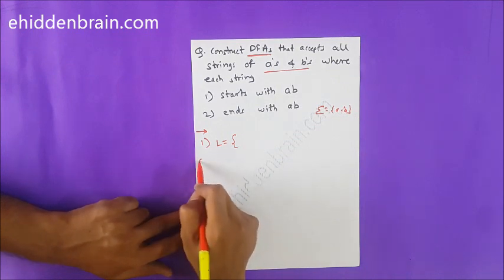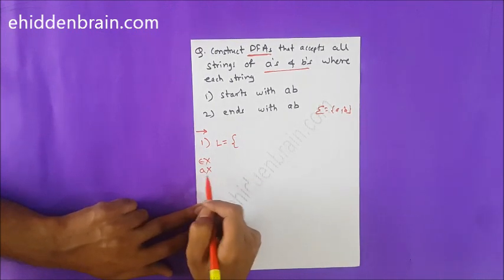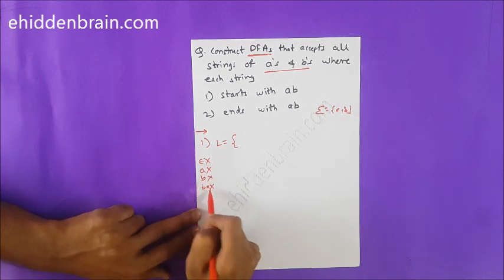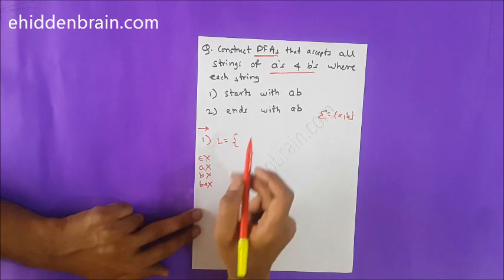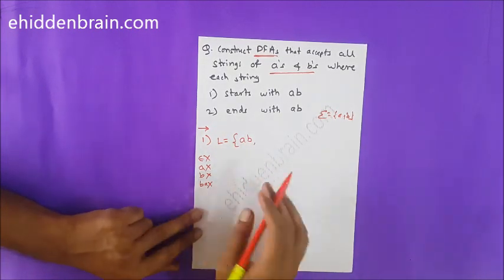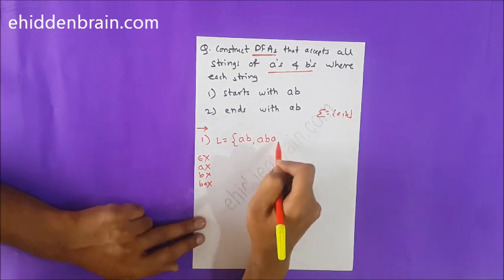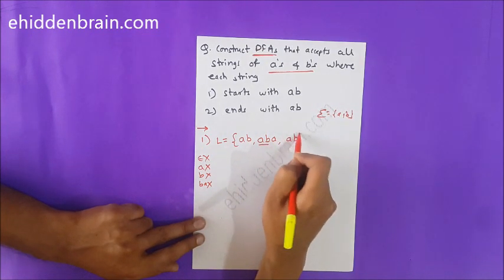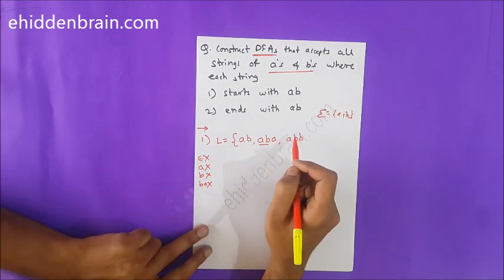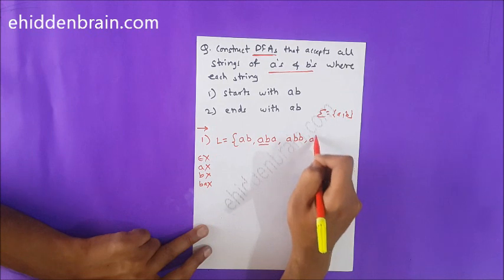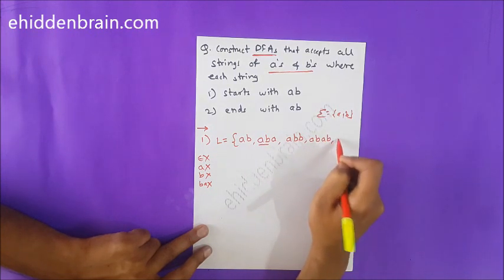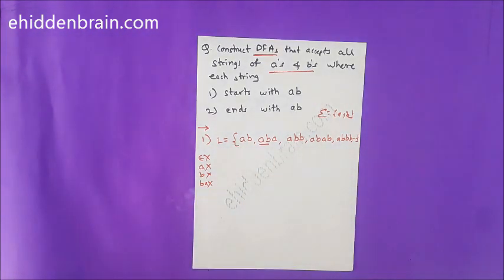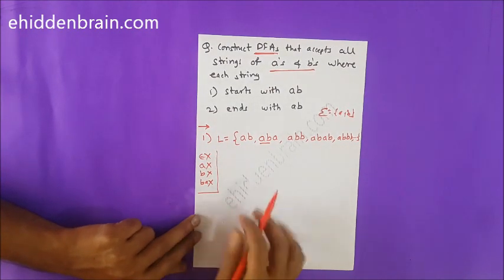What will be the minimal string? Epsilon is not possible because it never starts with AB. A is also not possible because it only starts with A with no B. B is not valid, and BA is also not valid. So the minimum valid string is AB. Then ABA is valid, ABB is valid, ABAB, ABBB — like this you can have multiple strings. These strings are not valid and serve as our hint.